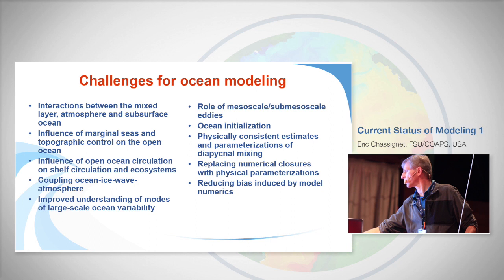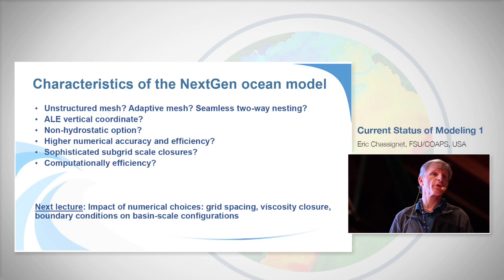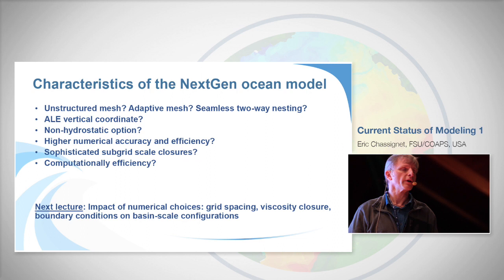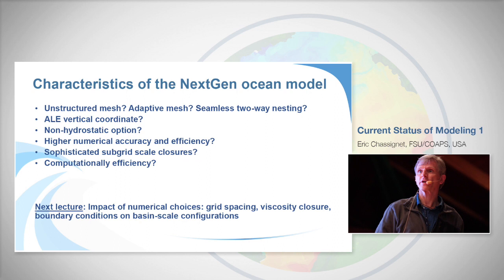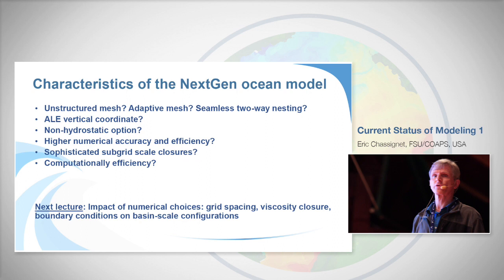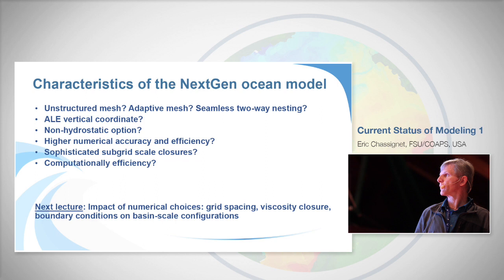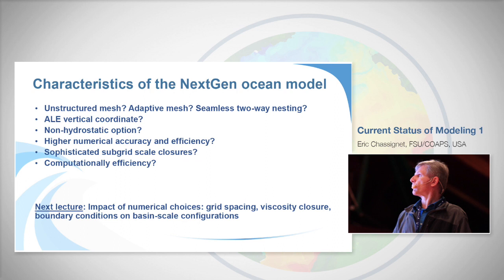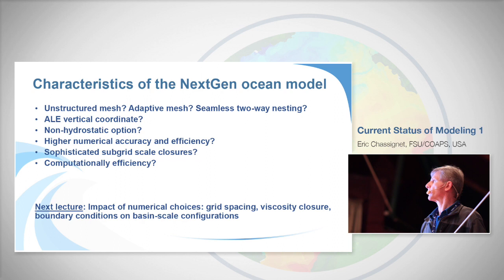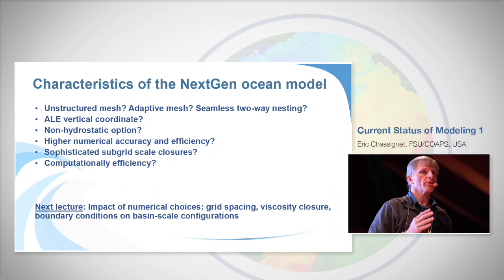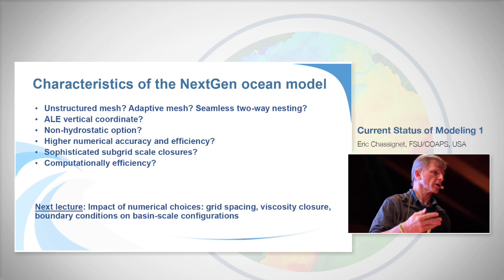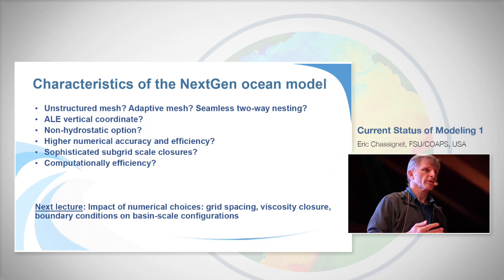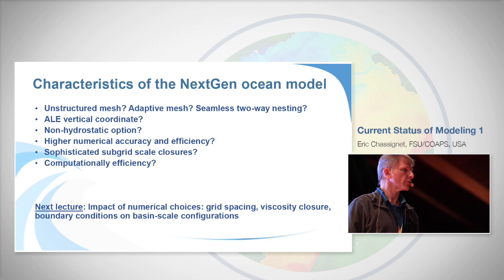What should be the next generation of ocean models? There's a lot of reflection taking place in the community. As models mature, you want to think 10-15 years ahead: structured mesh, adaptive mesh, seamless two-way nesting? Is ALE vertical coordinate the way to go, or should we go adaptive in the vertical? When does non-hydrostatic treatment matter? We always want higher numerical accuracy and efficiency, sophisticated subgrid-scale closures. Computational efficiency is also extremely important — you cannot separate numerical model development from computer architecture, which keeps evolving: vector computers, parallel computers, and now GPU-based systems. Each time, numerical modelers must adapt and rewrite code to run efficiently.